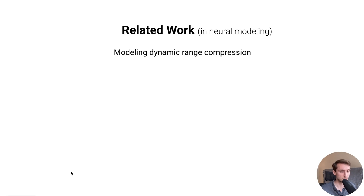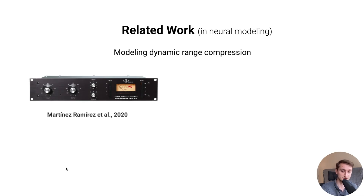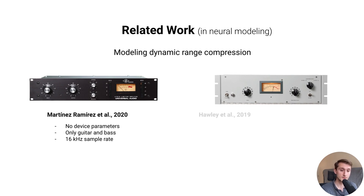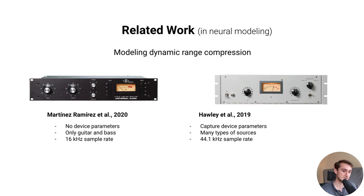Now let's talk about related work on analog modeling of dynamic range compression. Work from Martinez-Ramirez et al. looked at modeling the analog 1176 compressor, but had limitations: they didn't consider device parameters, only used guitar and bass signals, and operated at 16 kHz. The LA-2A was first looked at by Hawley et al. in 2019, who introduced the SignalTrain dataset. Their model captured device parameters, used many source types, and operated at a high sample rate, but had many artifacts detracting from overall quality.